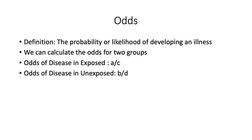The first concept we're going to discuss is odds. Odds are defined as the probability or likelihood of developing an illness. We can calculate the odds for two groups: the odds of disease in the exposed group and the odds of disease in the unexposed group. These are represented by the letters A over C and B over D respectively.